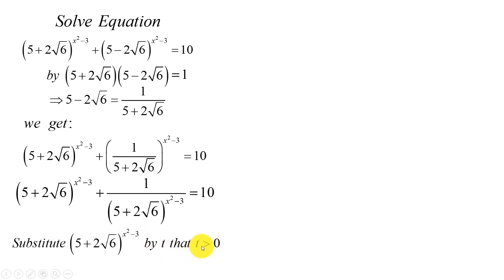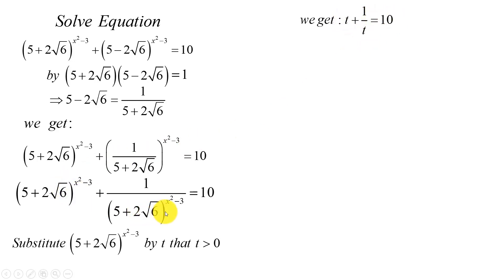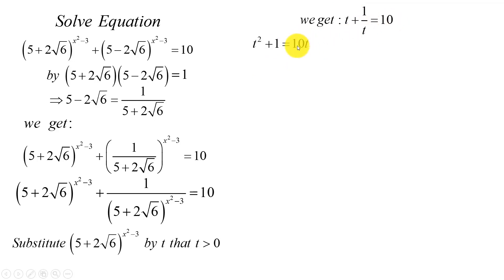Note that t is positive because it is an exponential function. So we get t + 1/t = 10. I substitute both terms by t and multiply both sides by t, giving t² + 1 = 10t. Moving 10t to the left-hand side: t² - 10t + 1 = 0.